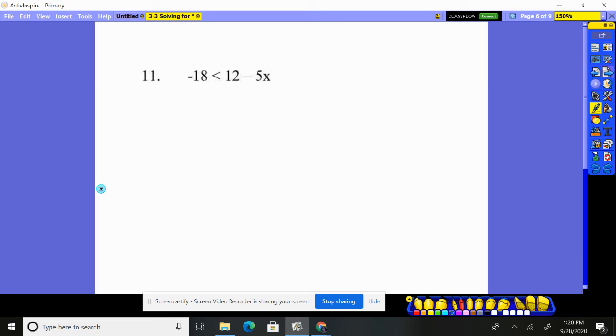Number 11. Looks like to me this number 12 needs to move over there. So I'm going to subtract 12 from both sides. I get -30 < -5x. Now we'll divide by what's in front of the x that is being multiplied by -5. So I divide both by that.